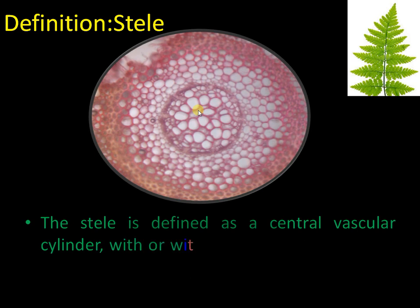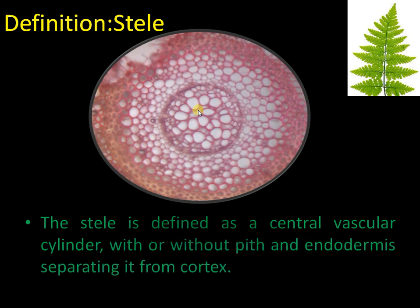Stele is defined as a central vascular cylinder, with or without pith, that is limited by endodermis. The vasculature consists of xylem and phloem. You can see xylem right here, embedded into phloem, and this is limited by the endodermal layer.